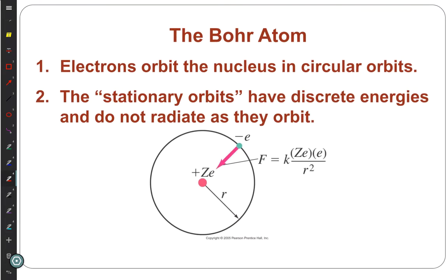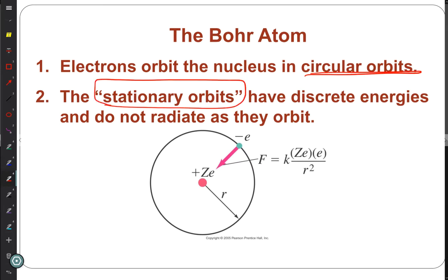Bohr's model starts with electrons making circular orbits, but with stationary orbits — the energy is fixed. This rule basically sets aside the classical law that an accelerating charge must radiate. Bohr posited stationary states where electrons maintain their energy as they orbit, so they can't continuously lose energy.